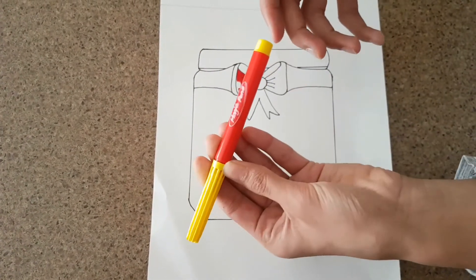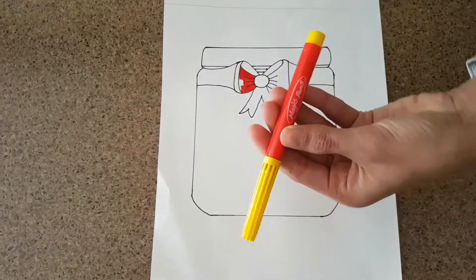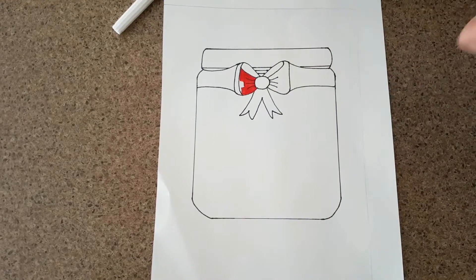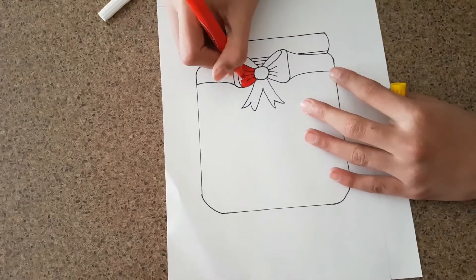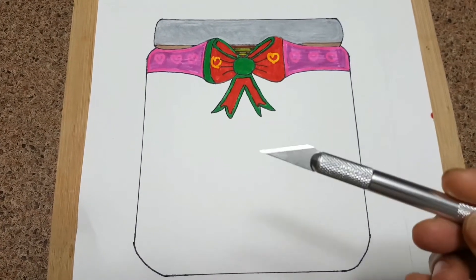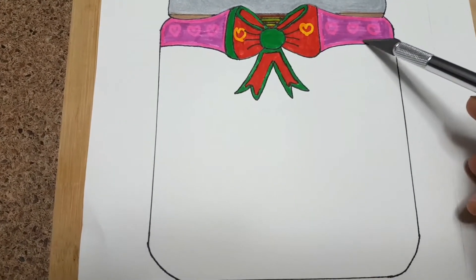The inside part of the jar you don't need to color. I'm using these magic pens, so basically when you color and then you put the white marker on top of it, it changes color. Now I'm just going to color it in. Here I'm done coloring and this is how it looks.